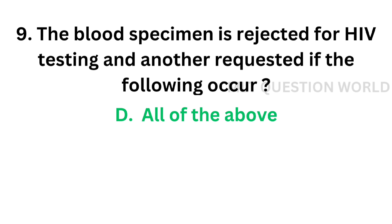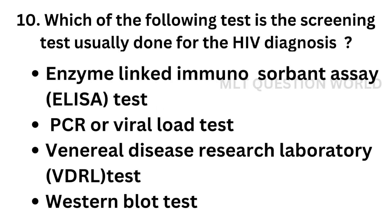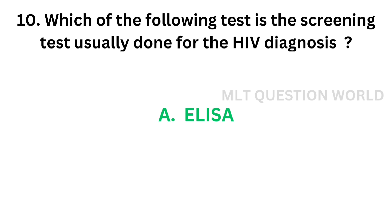In all of the above conditions, we have to take a new sample for the test. Question number 10: Which of the following is the screening test usually done for HIV diagnosis? Option A, ELISA; option B, PCR or viral load test; option C, VDRL; option D, Western blot test. The correct answer is option A, ELISA. ELISA is the common test done for HIV diagnosis.